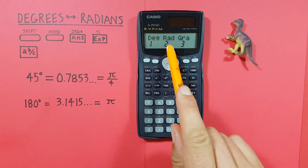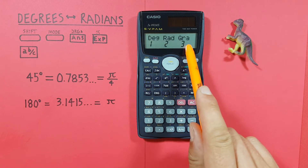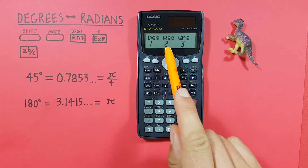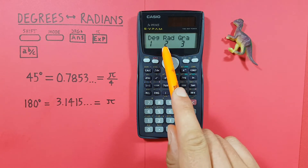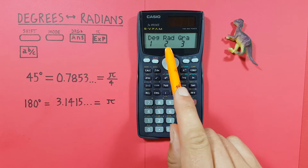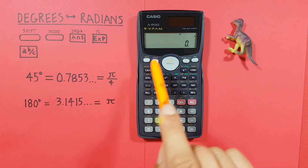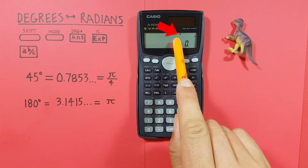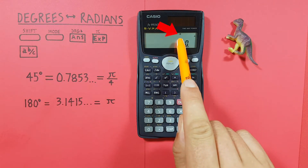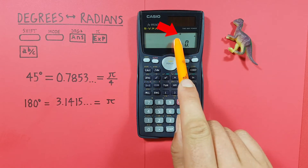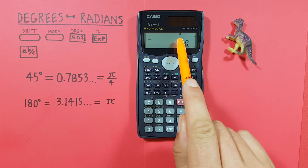Since we want to set our calculator to radians we press 2 for rad. Now we should see an R at the top of our screen, letting us know our calculator is set to radians mode.